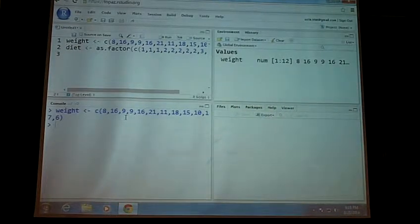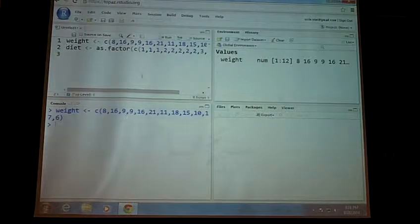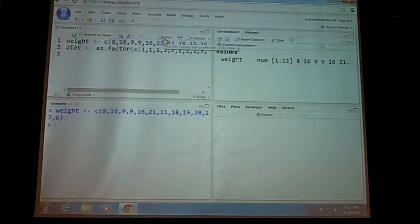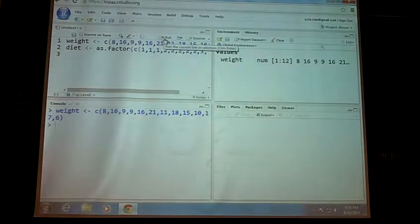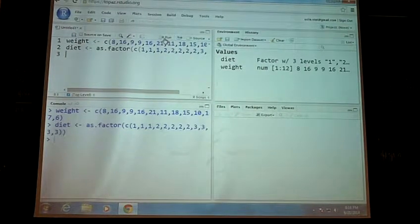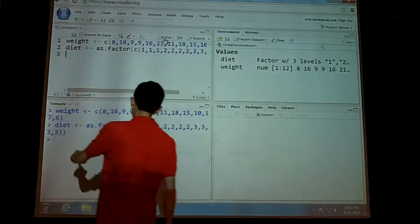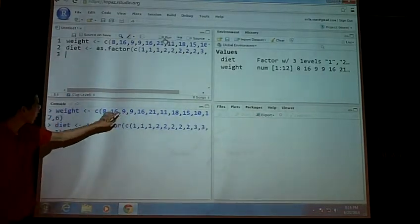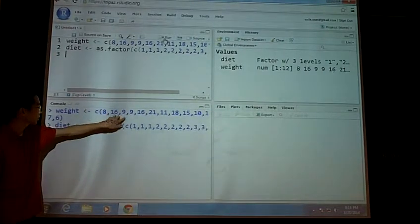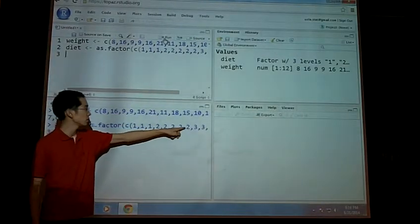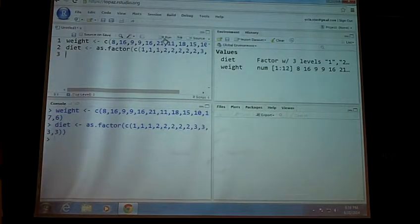And then I'm going to create a second vector indicating which diet each sheep goes on. I'm creating a vector called diet, and you can see it goes 1, 1, 1, meaning the first three values are on diet 1, and then 2, 2, 2, 2, 2, meaning the next five values are on diet 2.